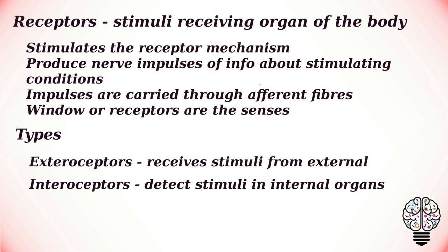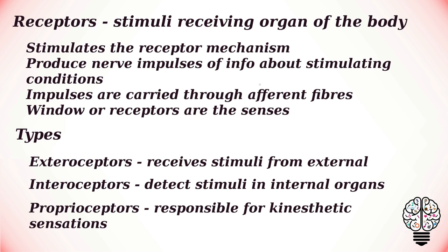Examples of interoception include stomach pain, chest pain, headache, and palpitations. The last category is proprioceptors, which are found in the peripheral regions of the body and are responsible for kinesthetic sensations. It should be clear that muscles themselves are not the receptors but rather the effectors or organs of response; however, muscles also contain receptor structures which give sensations whenever muscles make any movement in response.